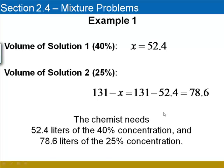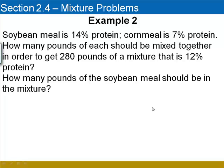Let's try to extend this to one more example. In this example, instead of two solutions containing H2SO4, now we have two different types of meal that contain a certain percentage protein. Soybean meal is 14% protein, while corn meal is 7% protein. We'd like to mix those two together to end up with 280 pounds of a mixture that is 12% protein. How many pounds of the soybean meal should be in the mixture?